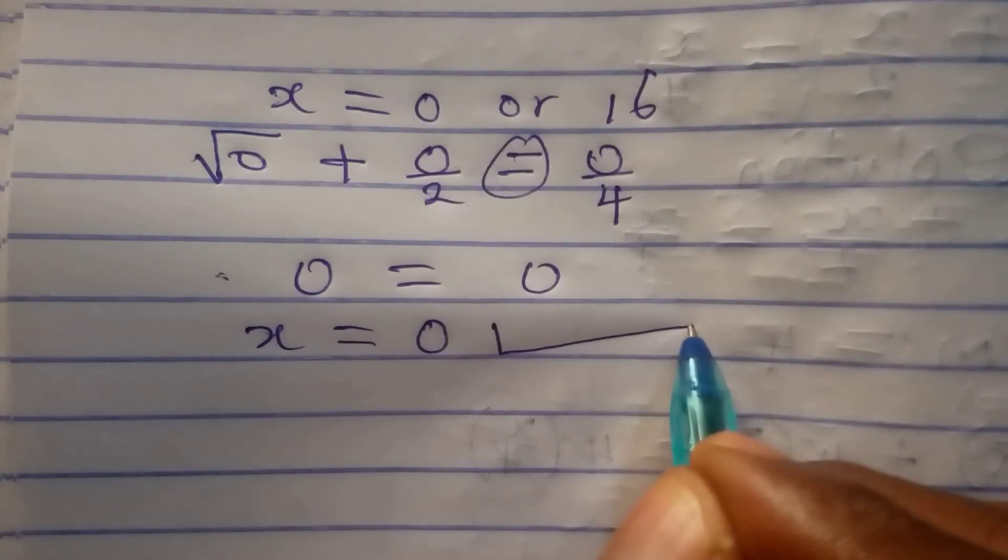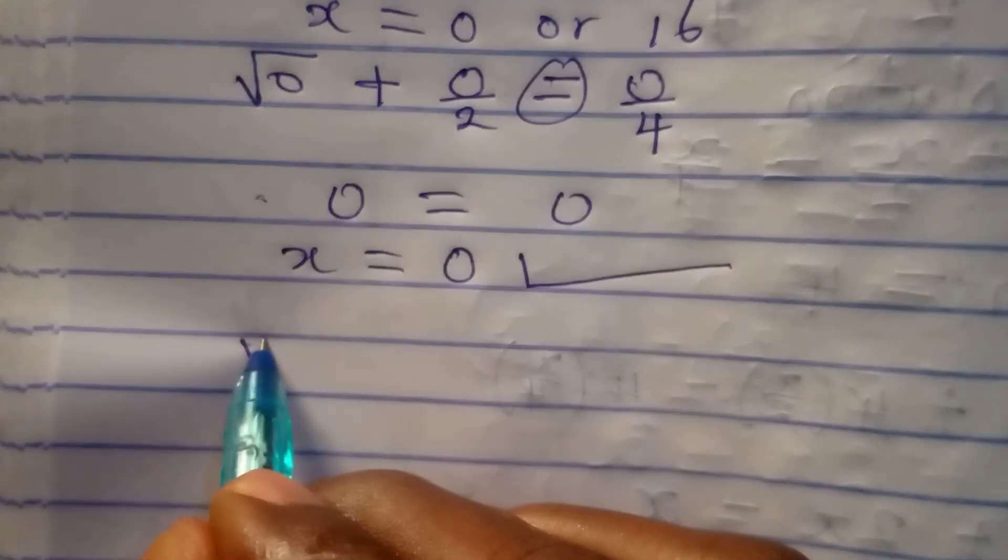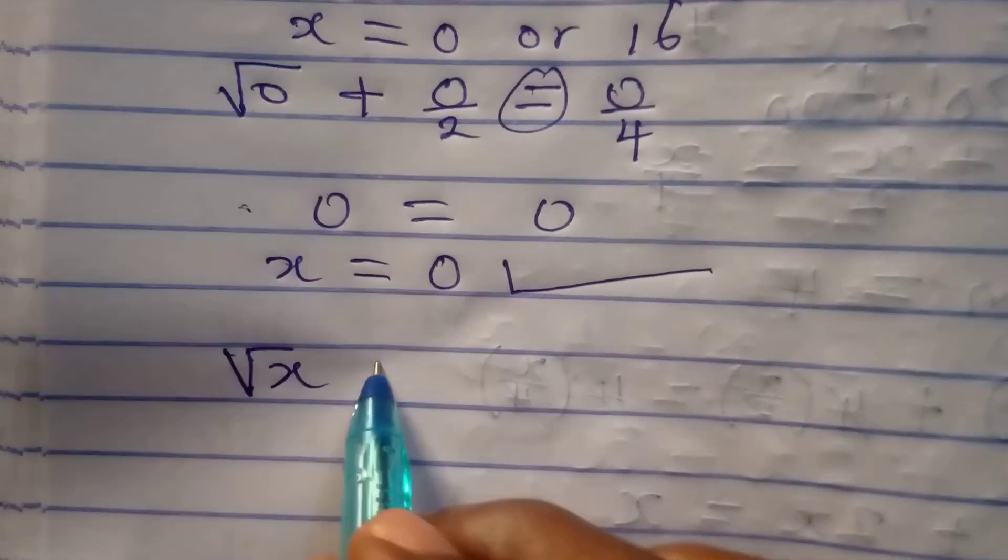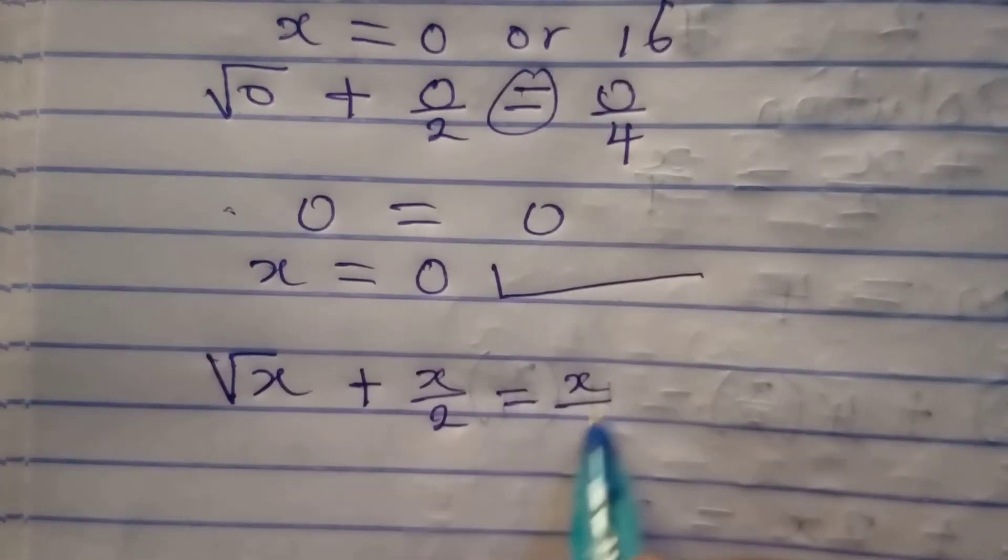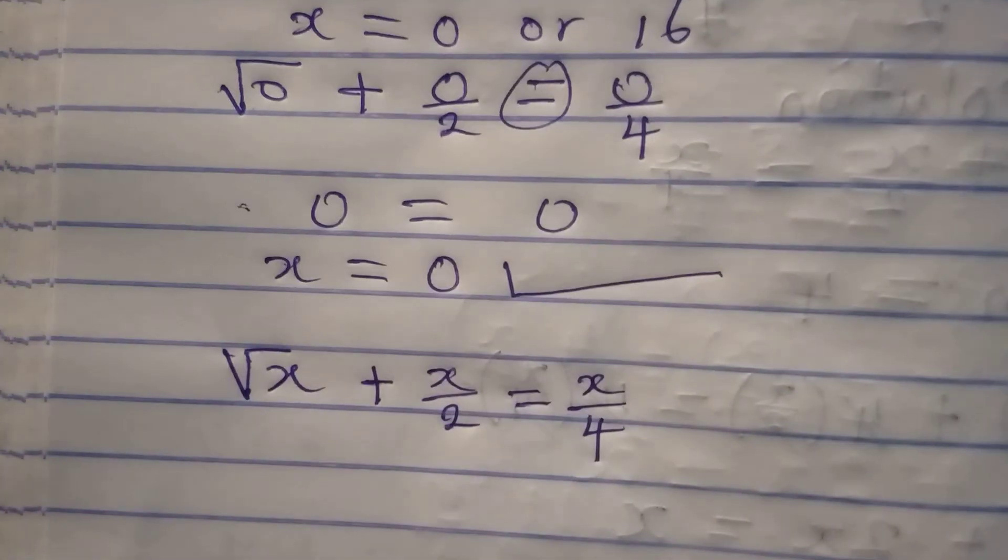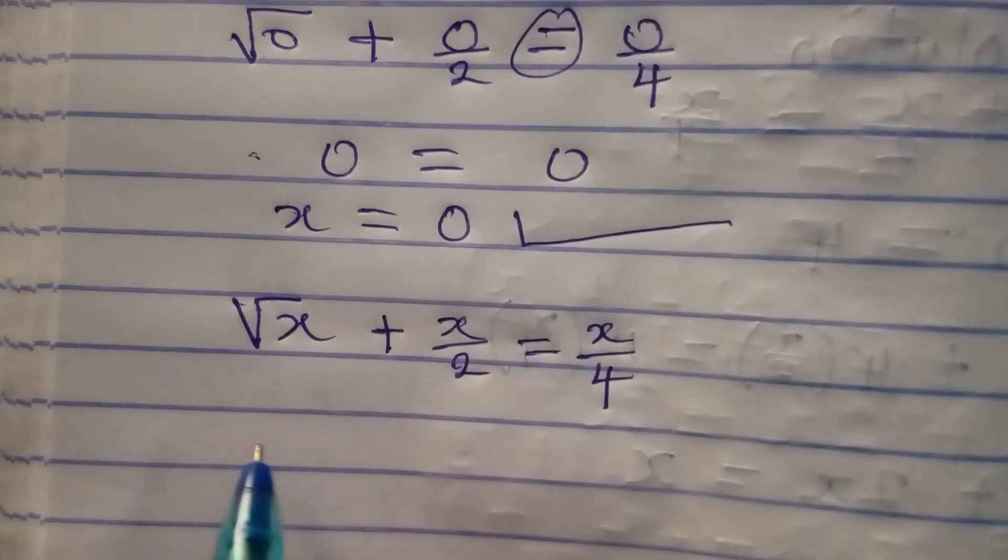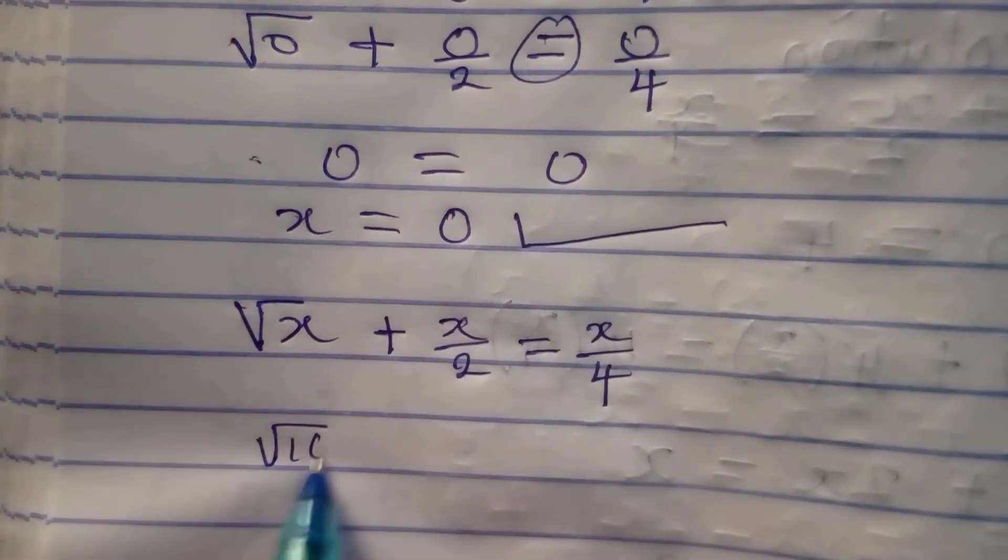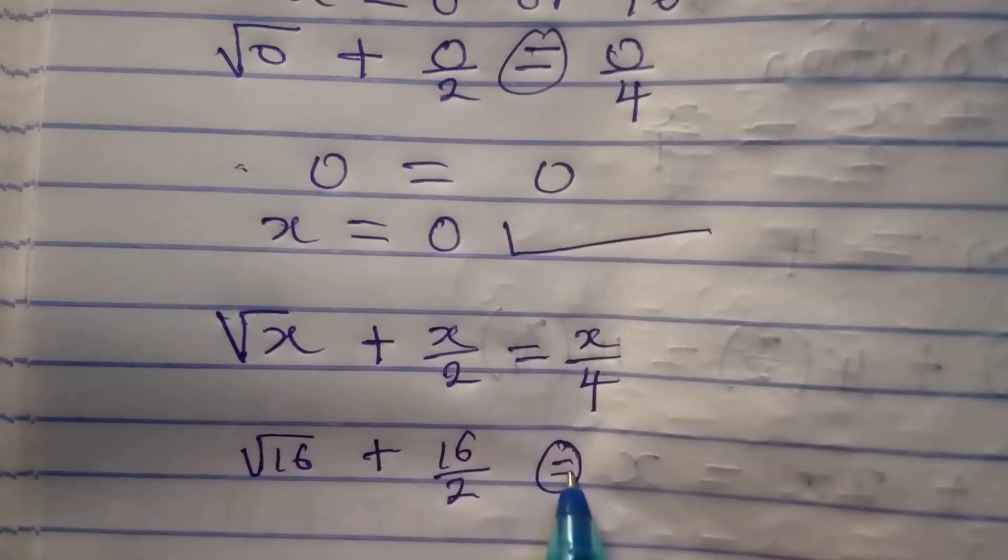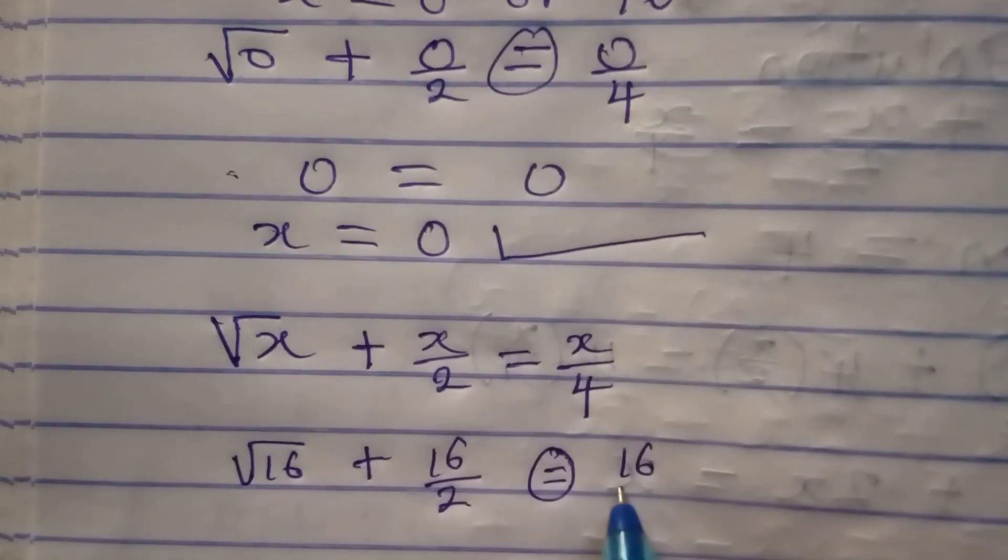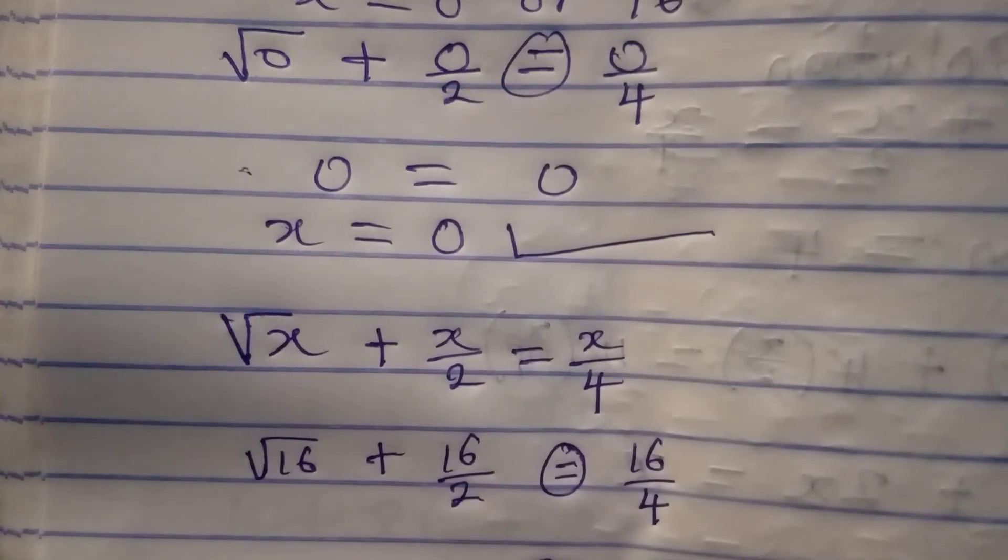Now let's try 16. The original equation remains square root of x plus x over 2 equals x over 4. We got 16 for this. Do you think it will satisfy the equation? Let's give it a try. We're going to have square root of 16 plus 16 over 2. Now will this be equal to 16 over 4? As a matter of fact, 16 over 4 is giving us 4.